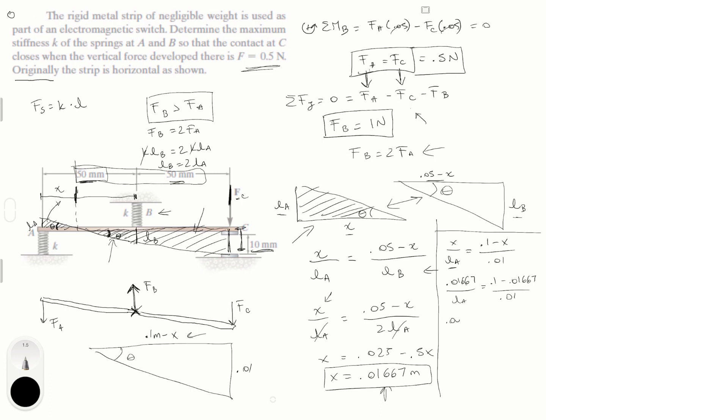0.01667 is equal to 0.1 LA minus 0.01667 LA. Sorry guys, right out of space. Solve for LA. You're going to get that LA is equal to 0.002 meters. We already know that 2 LA is equal to LB. We don't have to find it really, but let's find it just for the sake of it. But okay, what do we do with this length? Well, the last piece is that.